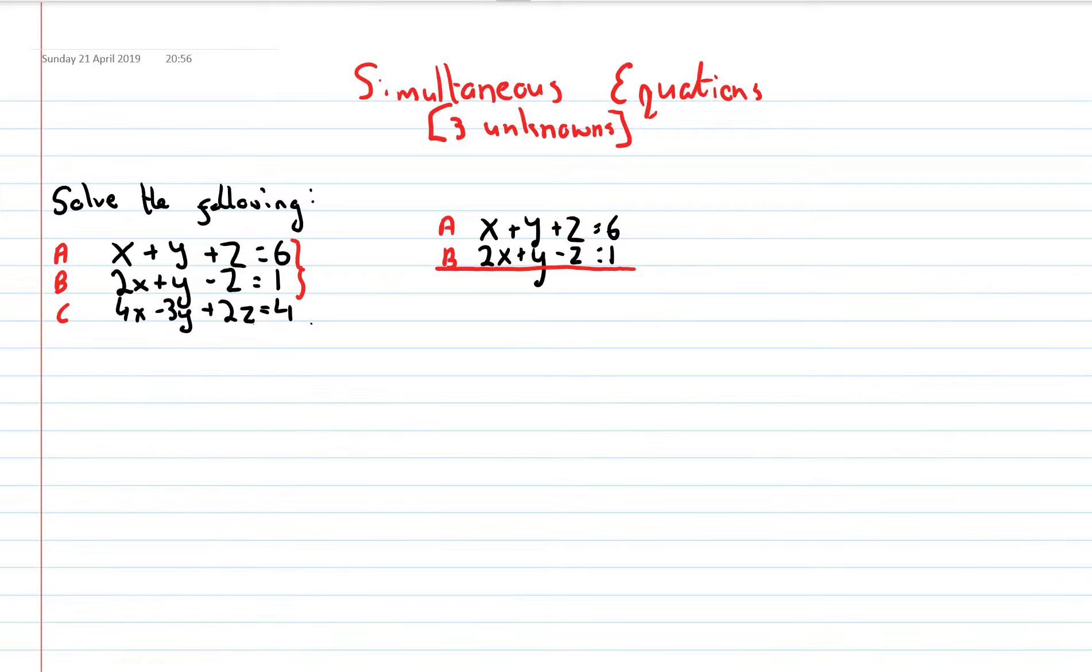And this will give me equation D. I have equation A, B, and C, so this one will give me equation D. Adding vertically, x and 2x is 3x, y and y is 2y, z and minus z is nothing, they're gone, and 6 and 1 is 7. So there is my equation D.